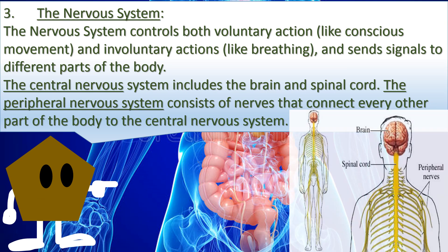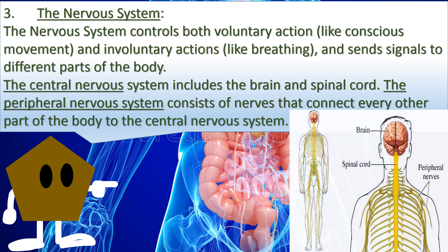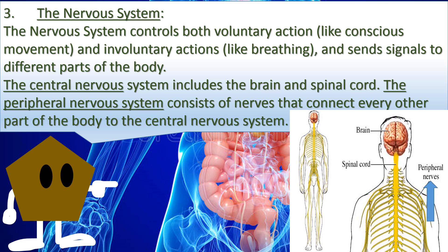3. The nervous system controls both voluntary actions like conscious movement and involuntary actions like breathing, and sends signals to different parts of the body. The central nervous system includes the brain and the spinal cord. The peripheral nervous system consists of nerves that connect every other part of the body to the central nervous system.